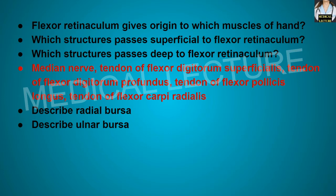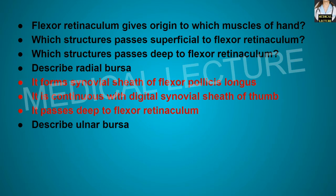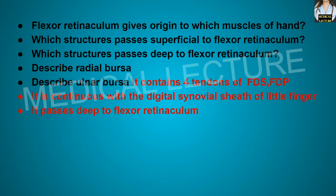Describe the radial bursa. The radial bursa forms the synovial sheath of the flexor pollicis longus and it is continuous with the digital synovial sheath of the thumb and passes deep to the flexor retinaculum. Describe the ulnar bursa. The ulnar bursa is also a synovial tendon sheath and it contains the tendons of the FDS and FDP — flexor digitorum superficialis and flexor digitorum profundus. It is continuous with the synovial sheath of the little finger and passes deep to the flexor retinaculum.